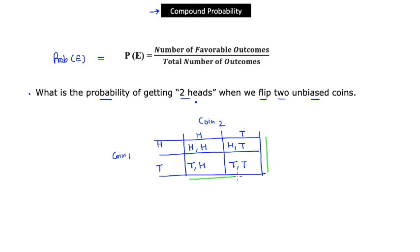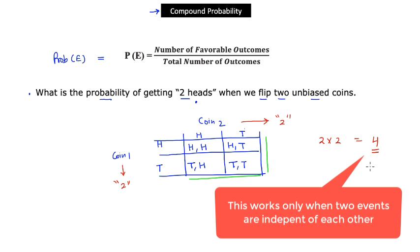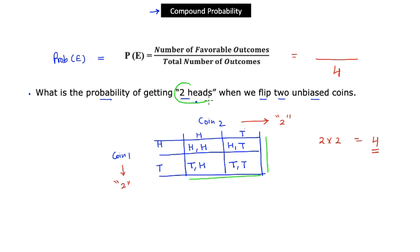Another way to calculate the total outcome space is to note that each coin has two possible outcomes and simply multiply those together: 2 × 2 = 4 total outcomes. Our interest is in getting two heads, and looking at the matrix there is only one way that can happen, so we write 1 in the numerator.